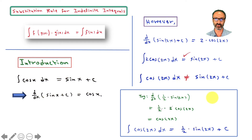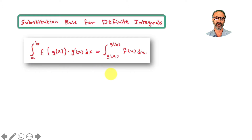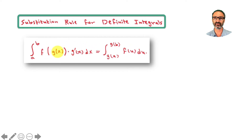If you're a bit confused, just wait and you'll see the flow clearly. For definite integrals with limits a to b, when you change the variable from x to u — replacing g of x with u — the limits also change: a and b become g of a and g of b respectively. I'll show you what this means with examples.